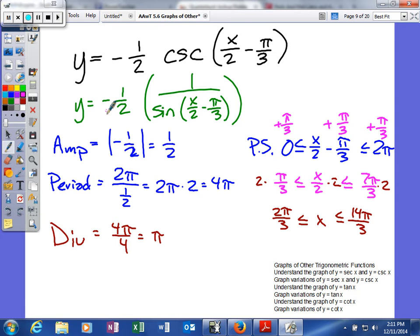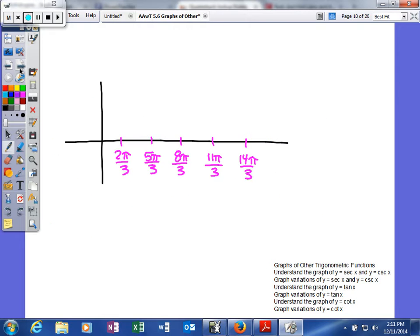Since it's negative one-half, we're actually going to graph our negative sine. Negative sine starts at 0, and then a minimum value. Our minimum value based on our amplitude is going to be 1/2 in this case.